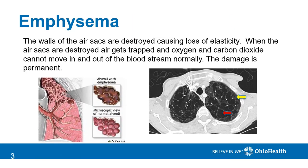Emphysema occurs when the walls of the air sacs are destroyed. This causes loss of elasticity and air trapping. When air gets trapped, oxygen and carbon dioxide cannot move in and out of the bloodstream normally. The damage is permanent.